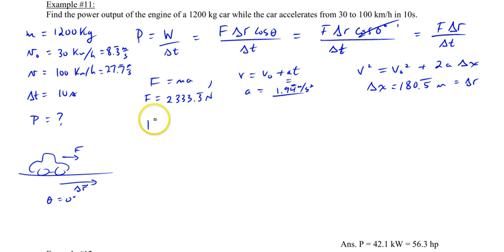And so now you know the displacement, the force, and the time, and so you can put your power in here, which would be 2333 Newtons multiplied by 180.5, and then all that divided by 10 seconds. And this should give you around 42,100 watts.